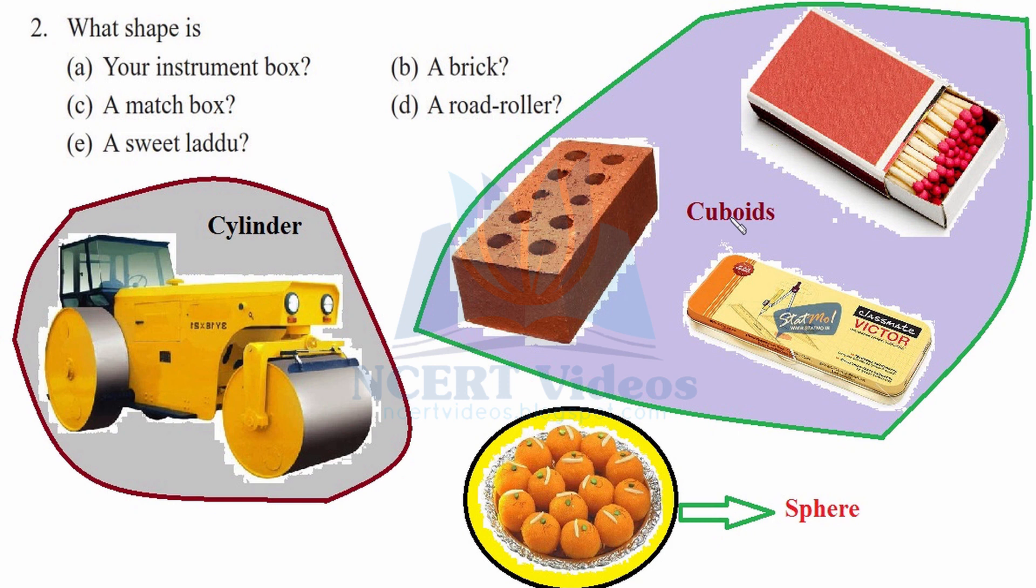Now let's move to a road roller. This is your road roller that is used in metaling of a road. We will focus on these tires or rollers - they are a kind of cylinder, that is their shape is of cylinder.